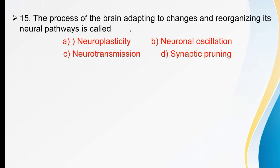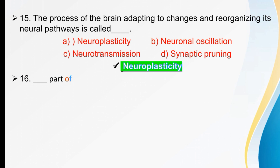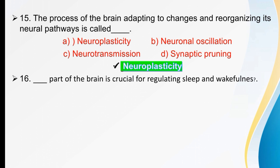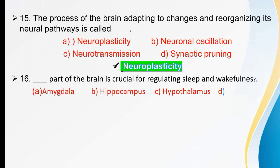The process of the brain adapting to changes and reorganizing neural pathways is called neuroplasticity. The right option is A. Which part of the brain is crucial for regulating sleep and wakefulness? Options are amygdala, hippocampus, hypothalamus, or cerebrum.